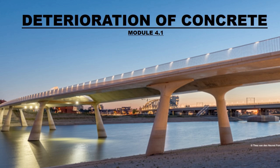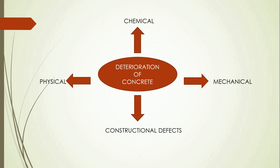Hello friends, welcome to Knowledge 101. In today's video we will be learning about the various causes through which concrete deteriorates. There are four major ways through which concrete can deteriorate: through chemical attack, through physical means, through mechanical elements, and through constructional defects.